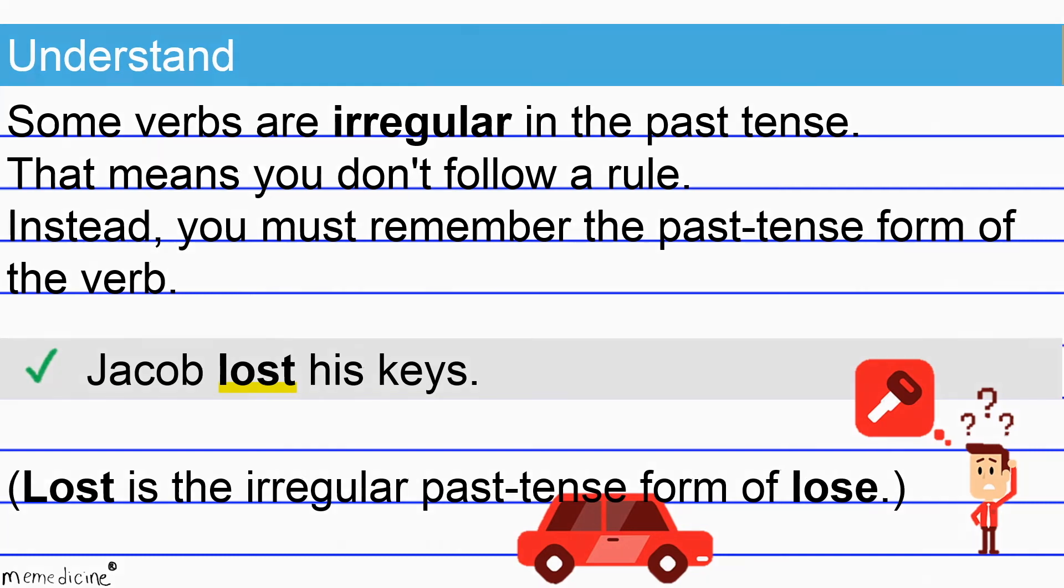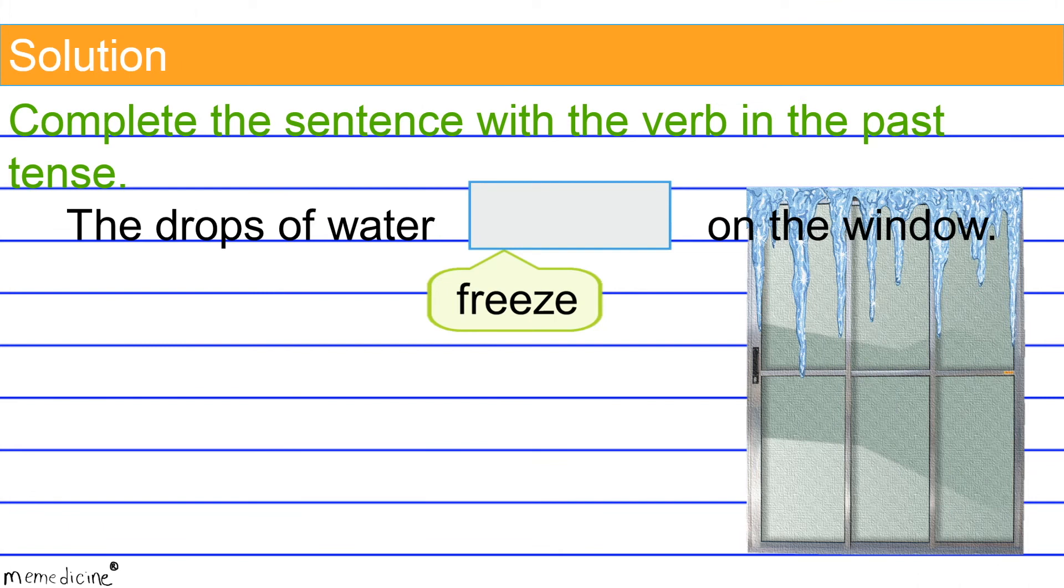All right, back to the original question and now for the solution. Froze is the simple past tense verb form of freeze. This is an irregular verb form so you'll have to commit it to memory.